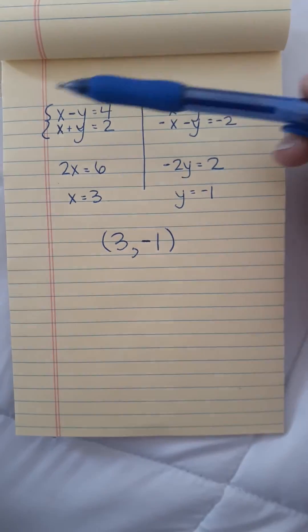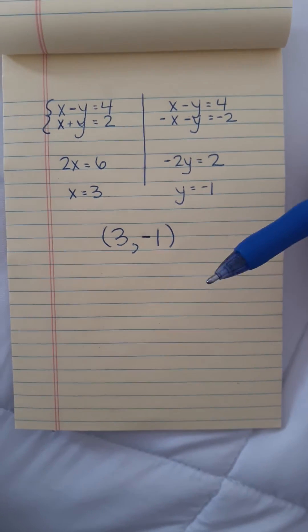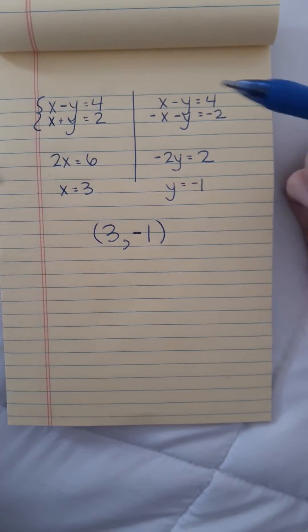We have this system of equations: x minus y equals 4, x plus y equals 2. We're going to use elimination. There's several different ways you can solve it, but elimination is the easiest.